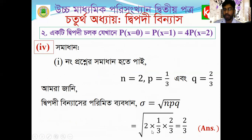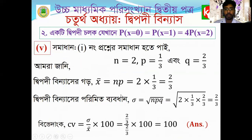The result is 2/3. The root of npq gives us 2/3 as the standard deviation. So we have n=2, p=1/3, q=2/3, and the standard deviation is approximately 2/3.